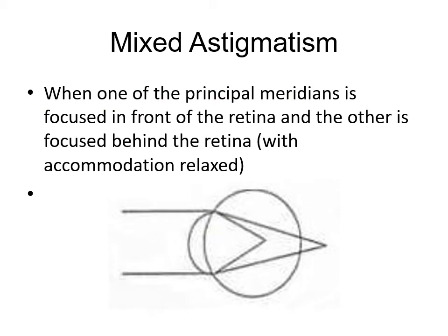Mixed astigmatism occurs when one principal meridian is focused in front of the retina and the other is focused behind the retina. One meridian is corrected with a plus prescription and the other with a minus, so the prescription has opposite signs — one plus and one minus. This is called mixed astigmatism.